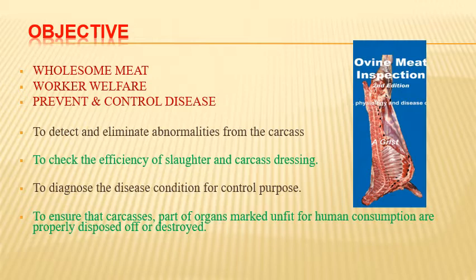Secondly, to check the efficiency of slaughter and carcass dressing — to enforce animal welfare aspects and ensure no cruelty is allowed, while also checking working efficiency and hygienic aspects of slaughter. Thirdly, to diagnose disease conditions for control purposes — identifying important diseases and providing messages for disease control programs. Finally, to ensure that carcasses and organ parts marked unfit for human consumption are properly disposed of or destroyed.